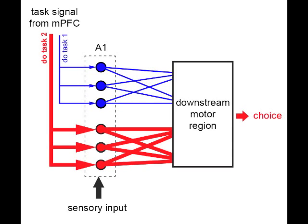Essentially, the network can select either sound simply by activating the right population of neurons, without requiring any special tuning properties in those neurons.